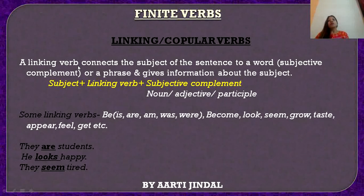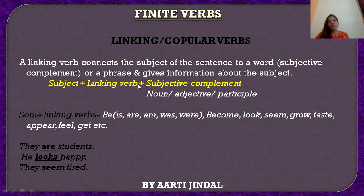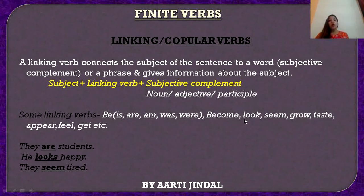A linking verb connects the subject of the sentence to a word or a phrase and gives information about the subject. Linking verb subject ko kisi word ke saath ya kisi phrase ke saath jod deti hai — ek aise word ke saath jo ki subject ke baare mein kuch information deta hai, aur us word ko hum complement kehte hain — specifically subjective complement. Linking verb ko apna meaning complete karne ke liye hamesha hi kisi word ya phrase ki avashyakta hoti hai. Sentence ka structure hota hai: subject + linking verb + subjective complement. Subjective complement ke roop mein hum noun, adjective, ya participle use karte hain. Some linking verbs are: be, is, are, am, was, were, become, look, seem, grow, taste, appear, feel, get, etc.